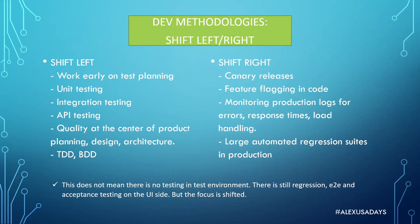Popular framework approaches in shift left are TDD and BDD. TDD is test-driven development, where you write your tests first and then build code for those tests. BDD is behavior-driven development, which came from TDD but is about describing how systems should behave in plain English using Gherkin language, and then building the functionality around that behavior-driven approach. I will leave links in the description for TDD and BDD so you can read about them and learn more.